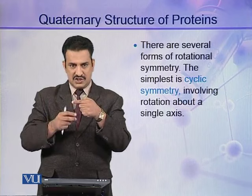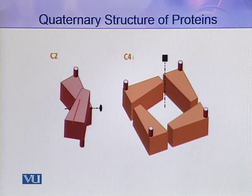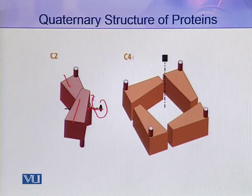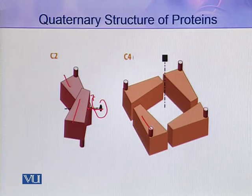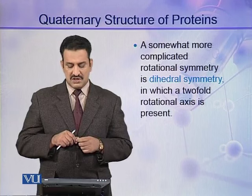The protomers are arranged around this single rotational axis. In the diagram, you can see two protomers with a single rotational axis around which they can rotate. This is called cyclic symmetry. It may contain more than two protomers — one, two, three, four — but the rotational axis remains only one. This type of symmetry is called cyclic symmetry.